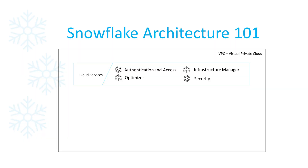The top layer is cloud services. The cloud layer is a collection of services that coordinate activities across Snowflake. These services tie together all the different components of Snowflake in order to process user requests from login to query dispatch. The cloud services layer also runs on compute instances provisioned by Snowflake from the cloud provider. For example, this layer handles access and authentication. It also handles query processing.